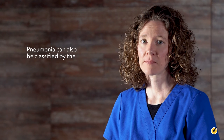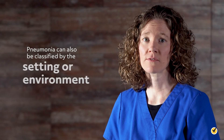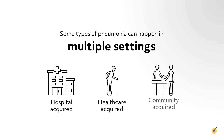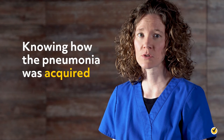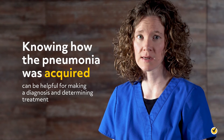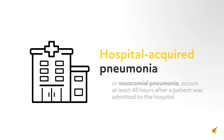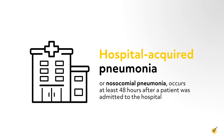Pneumonia can also be classified by the setting or environment in which it occurs. There is some overlap between these categories because some types of pneumonia can happen in multiple settings, but knowing how the pneumonia was acquired can be helpful for making a diagnosis and determining treatment. Hospital-acquired, or nosocomial pneumonia, occurs at least 48 hours after a patient was admitted to the hospital.